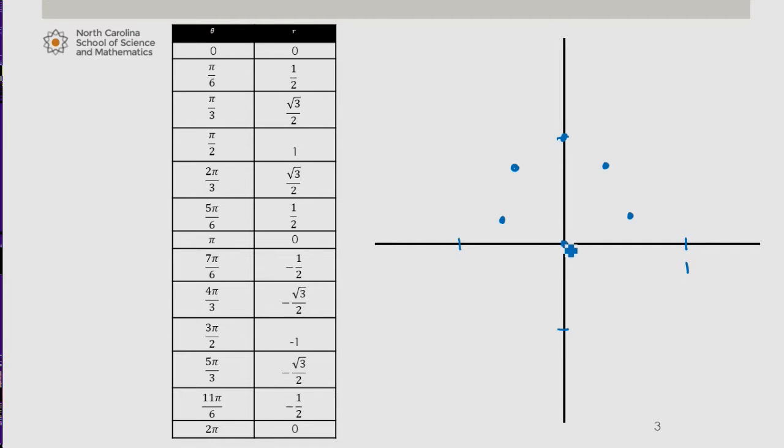And back at pi, I'm at 0. At 7 pi over 6, I notice that my r value is negative 1 half. If it were a half, then my coordinate would be out here.